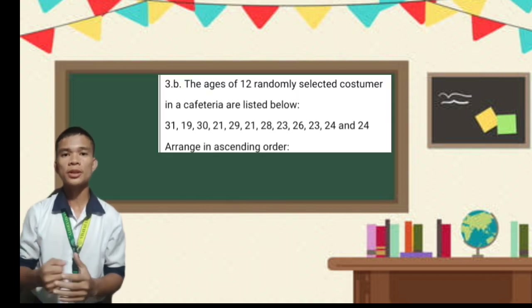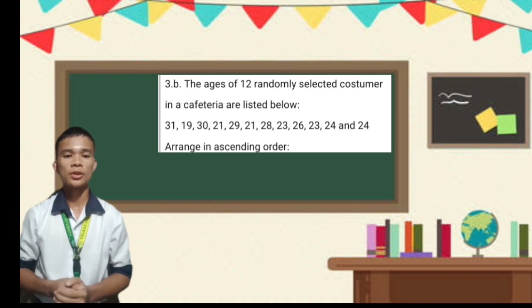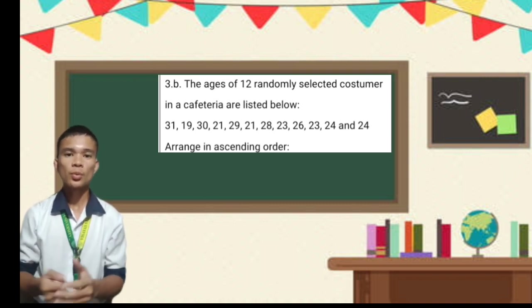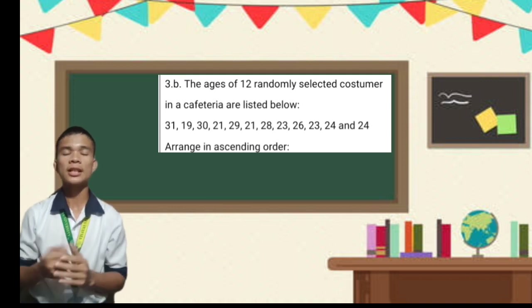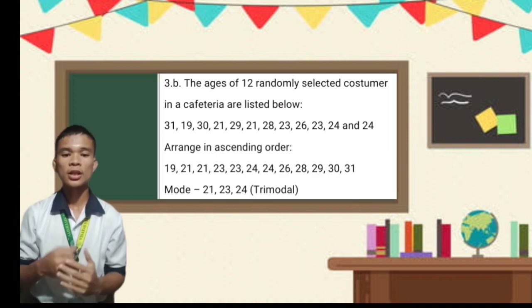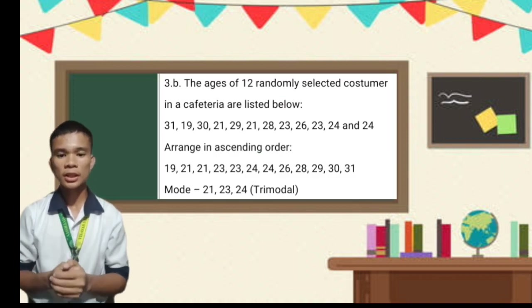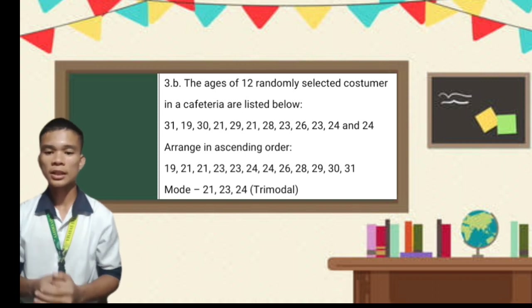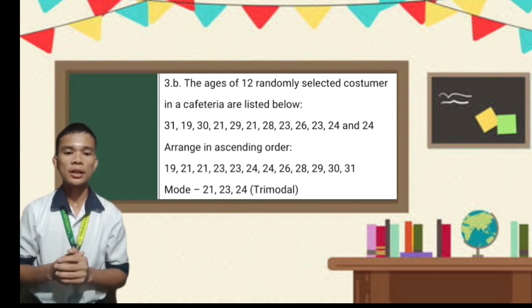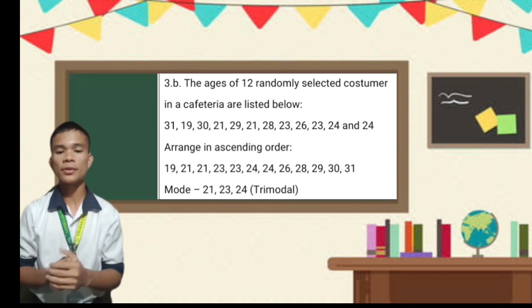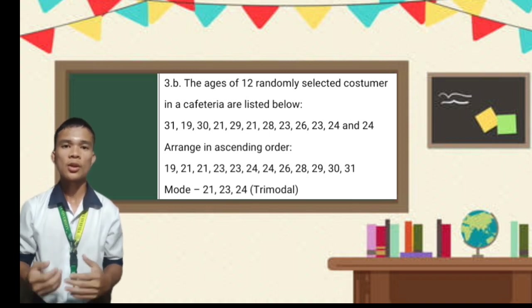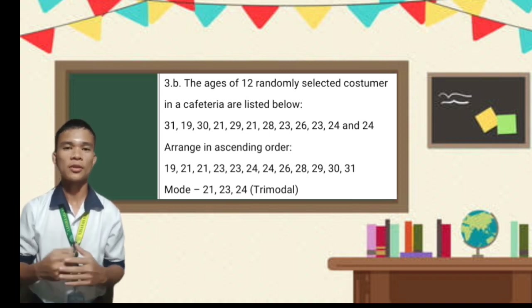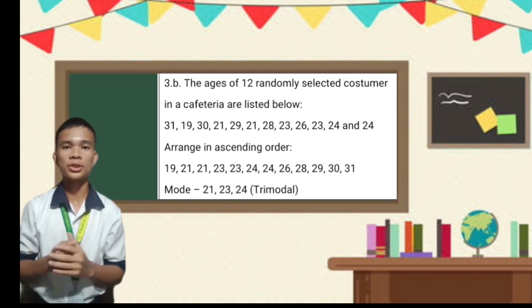For the second example: the ages of 12 randomly selected customers are 31, 19, 30, 21, 29, 21, 28, 23, 26, 23, 24, and 24. Vera, write them in ascending order: 19, 21, 21, 23, 23, 24, 24, 26, 28, 29, 30, and 31. The numbers that appear most frequently are 21, 23, and 24. What mode do we call this? It is trimodal because it consists of three modes.